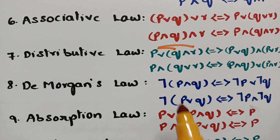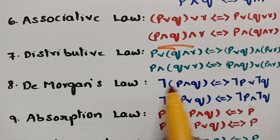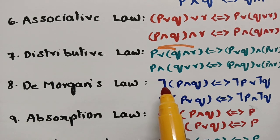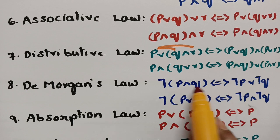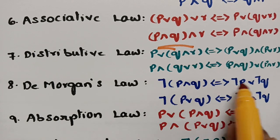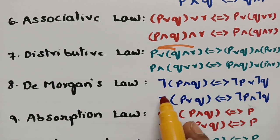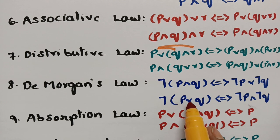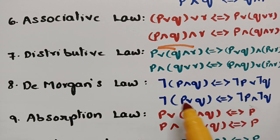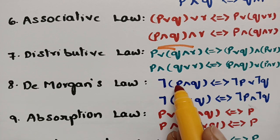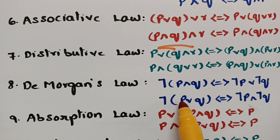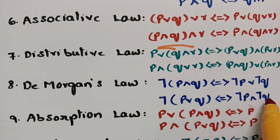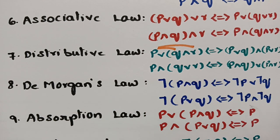Next is De Morgan's law, which is also very simple. The negation of (p AND q): if you send the negation sign inside, AND becomes OR. So negation of (p AND q) equals negation p OR negation q. Similarly, negation of (p OR q): sending negation inside, OR becomes AND, giving negation p AND negation q. This is De Morgan's law.